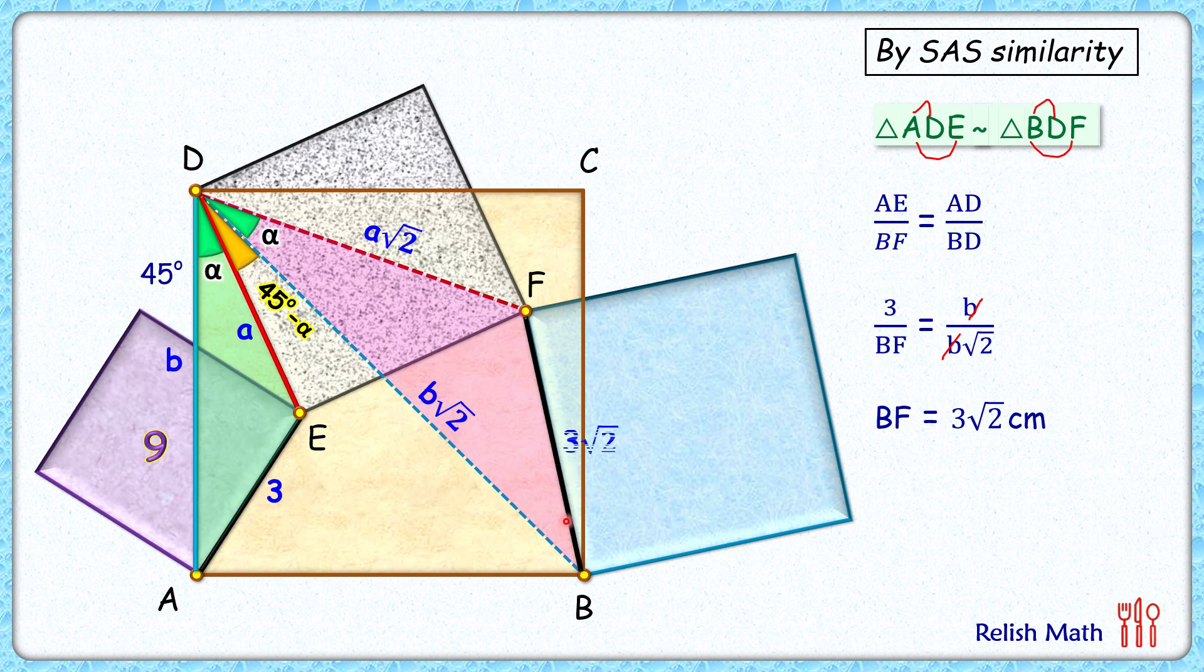So BF length is 3√2 cm, and the area of the blue square we need to find is (3√2)², which equals 9 × 2 or 18 cm². That's our answer.